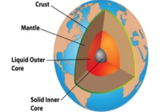The evolution of Earth's crust is a complex and dynamic process that spans billions of years, shaped by numerous geological, tectonic, and environmental factors. Understanding the evolution of the Earth's crust involves examining changes in its composition, structure, and distribution over geological time scales.